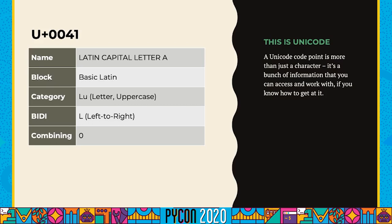The basic Latin block has a lot of overlap with ASCII — in fact, the first 128 code points in Unicode match the 128 values in ASCII. We can see the category: uppercase letter. We can see information about bidirectionality — English and most other Western European languages are written left to right. There's also a combining class property, which we'll get to in just a second. There's a lot more that you could look up in the full Unicode database.